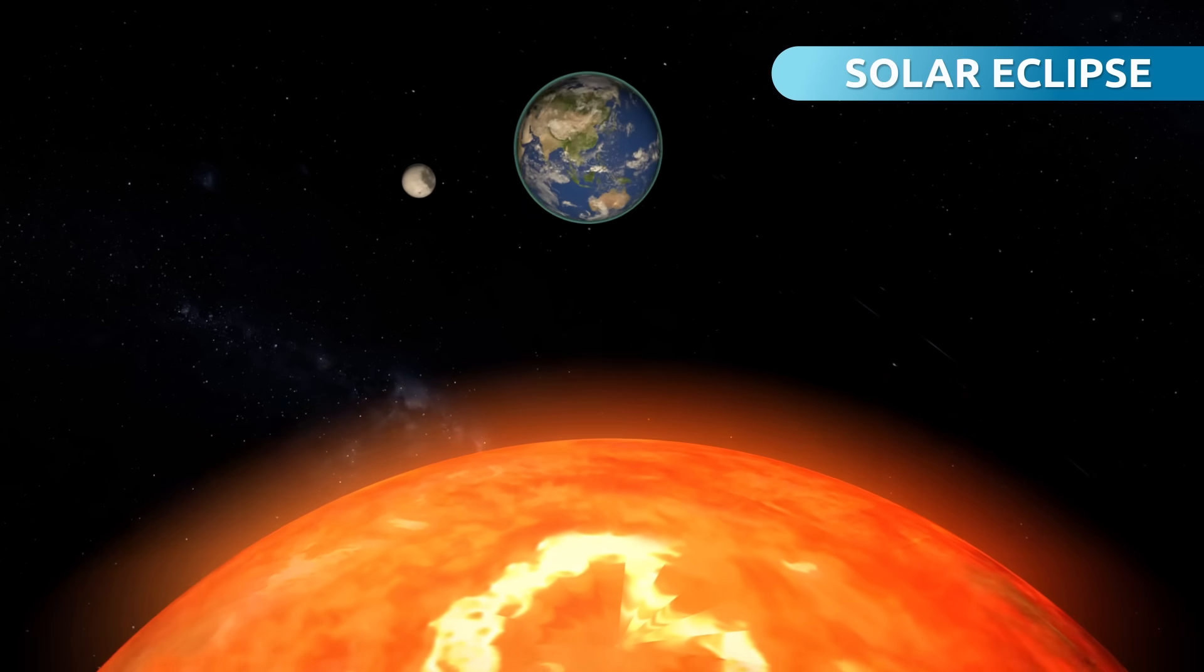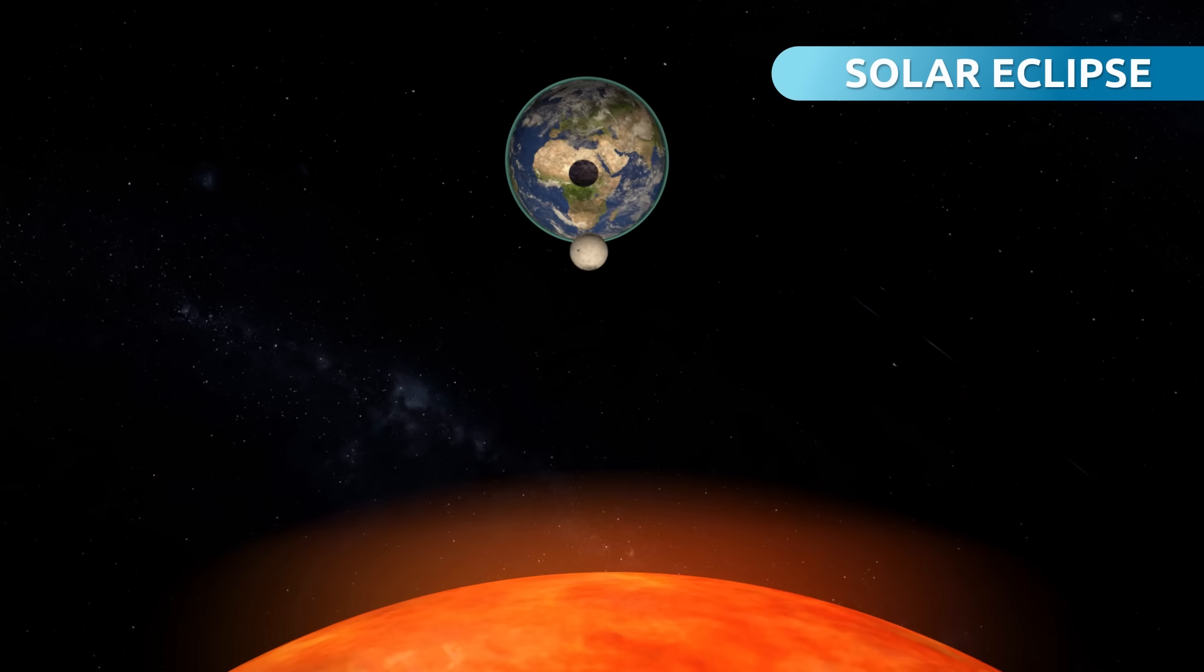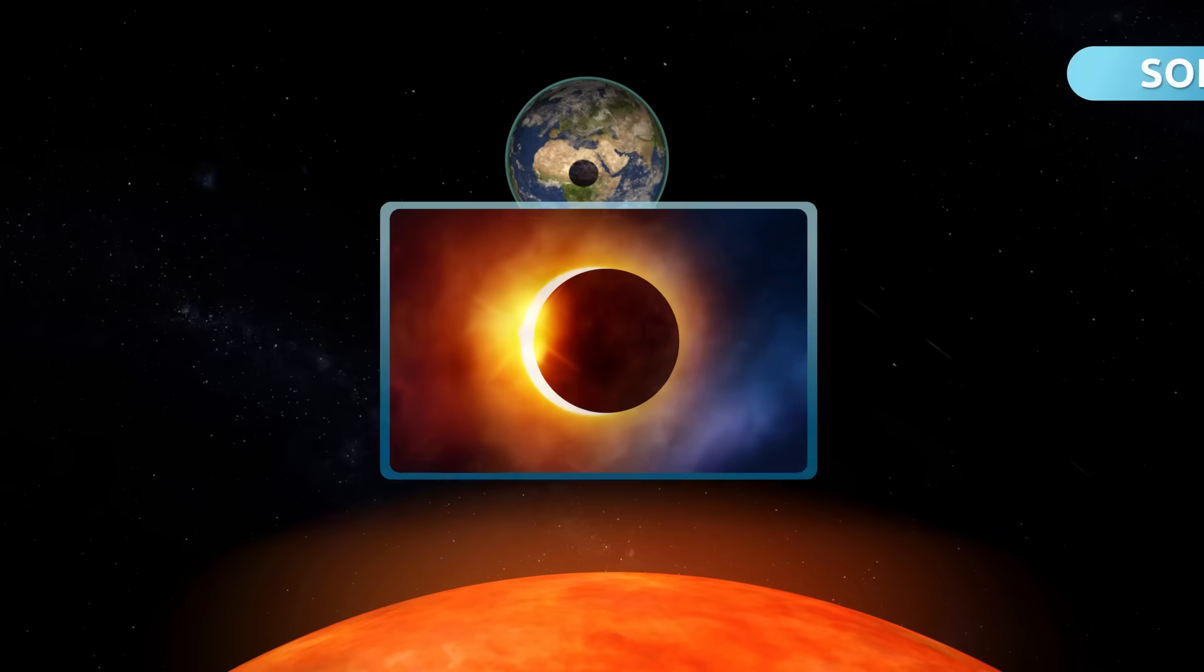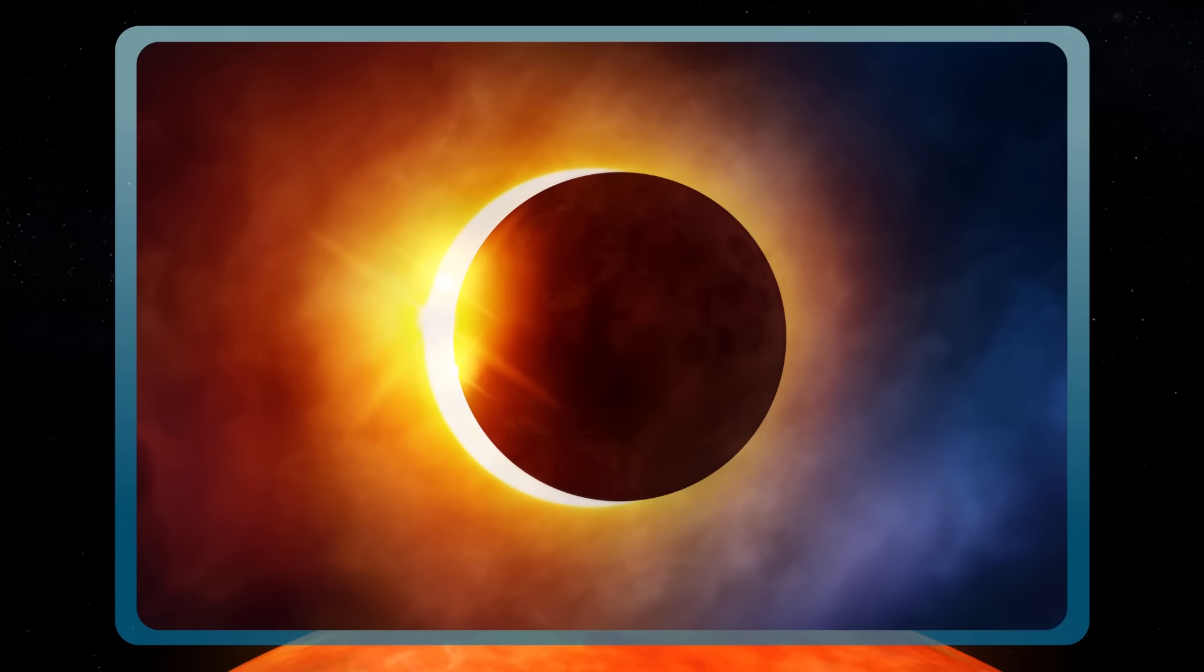This means that during daytime, the Moon positions itself in front of the Sun, covering it up. That's why from Earth, we see something similar to a ring of light.